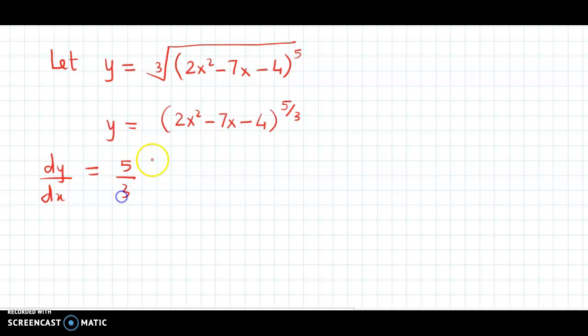This will be 5 by 3 times 2x squared minus 7x minus 4 raised to n minus 1, which is 5 by 3 minus 1, times the derivative of this inner function 2x squared minus 7x minus 4. Here we have the chain rule used.